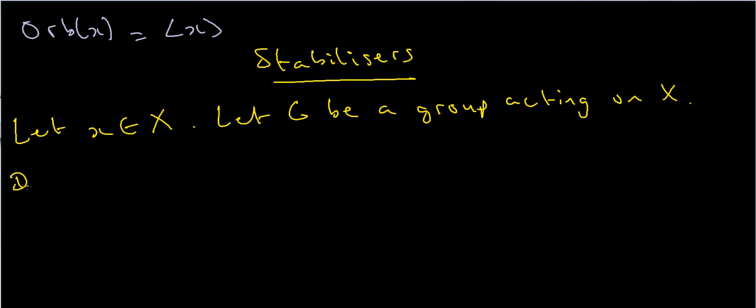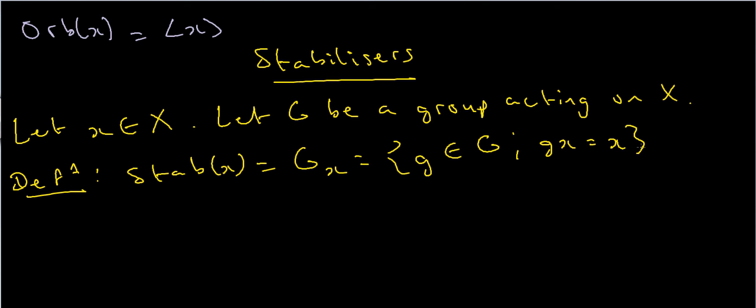So what's my definition? Well, I define the stabilizer, which I'll write as stab(x), and an equally valid notation is G_x, whichever you choose is a matter of taste. This is the set of all elements which keep x the same, or the set of all elements which fix x. In other words, that's the set of all elements g in G such that gx equals x.